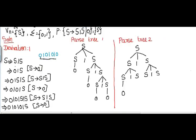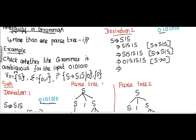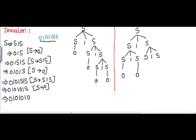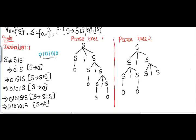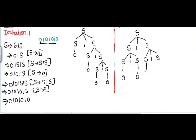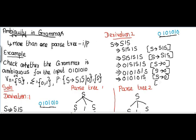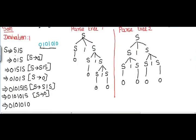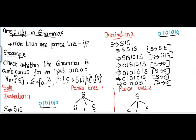Instead of S I substitute 0, and then again instead of S I substitute 0 since I need 0. I completed up to 0 1 0 1. The next character in the input is 0, so instead of S I substitute 0. I substitute in the diagram as well. So I got the input symbol 0 1 0 1 0 1 0.